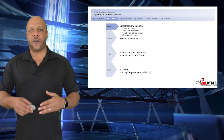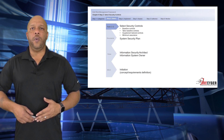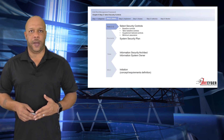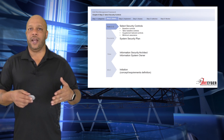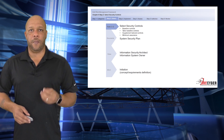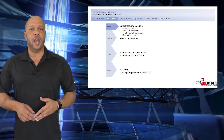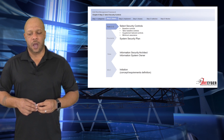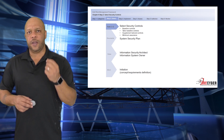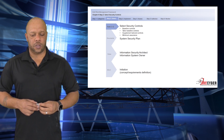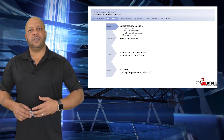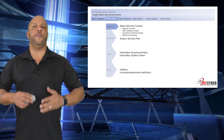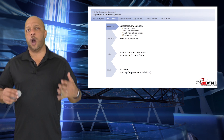Once we've identified our baseline controls, we need to begin to tailor that baseline and supplement with any controls that may be required or necessary to provide overall minimum assurance. The primary roles involved here are the information security architect and the information system owner.